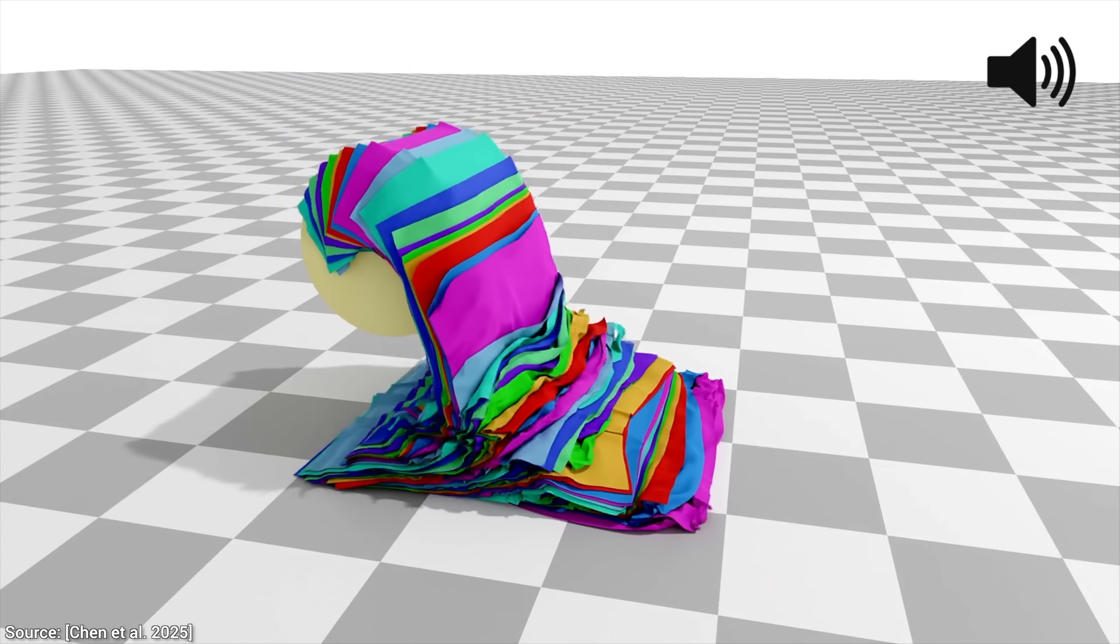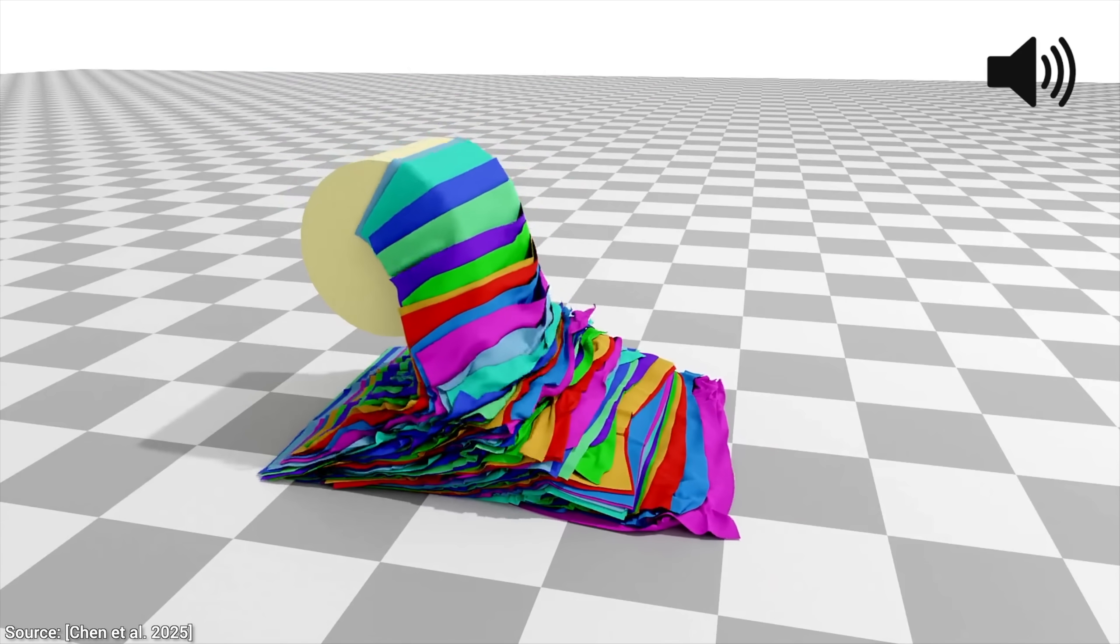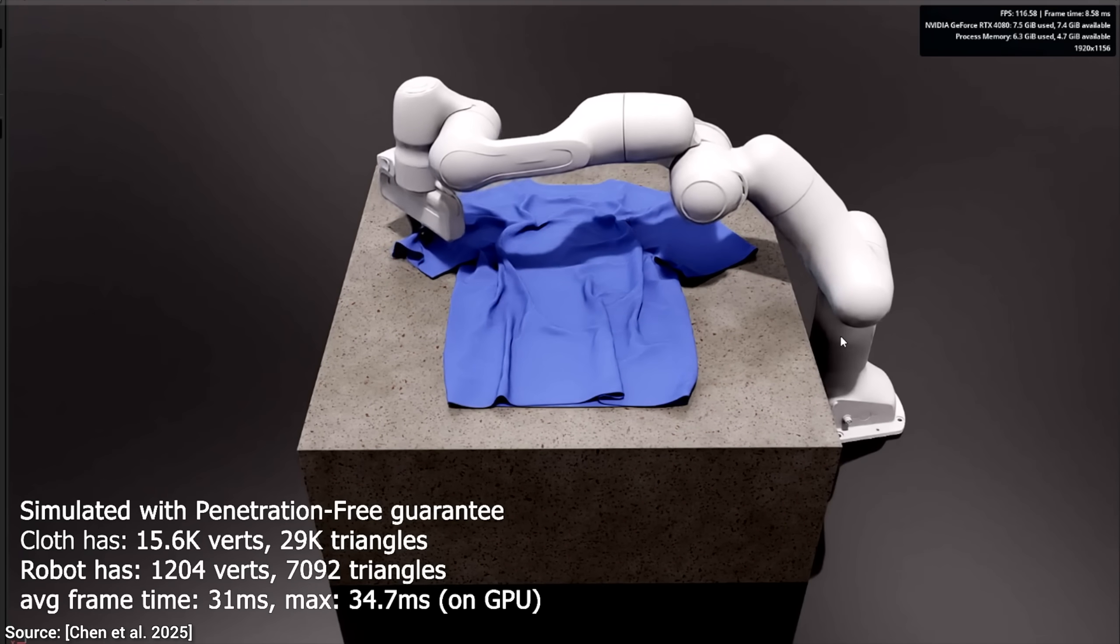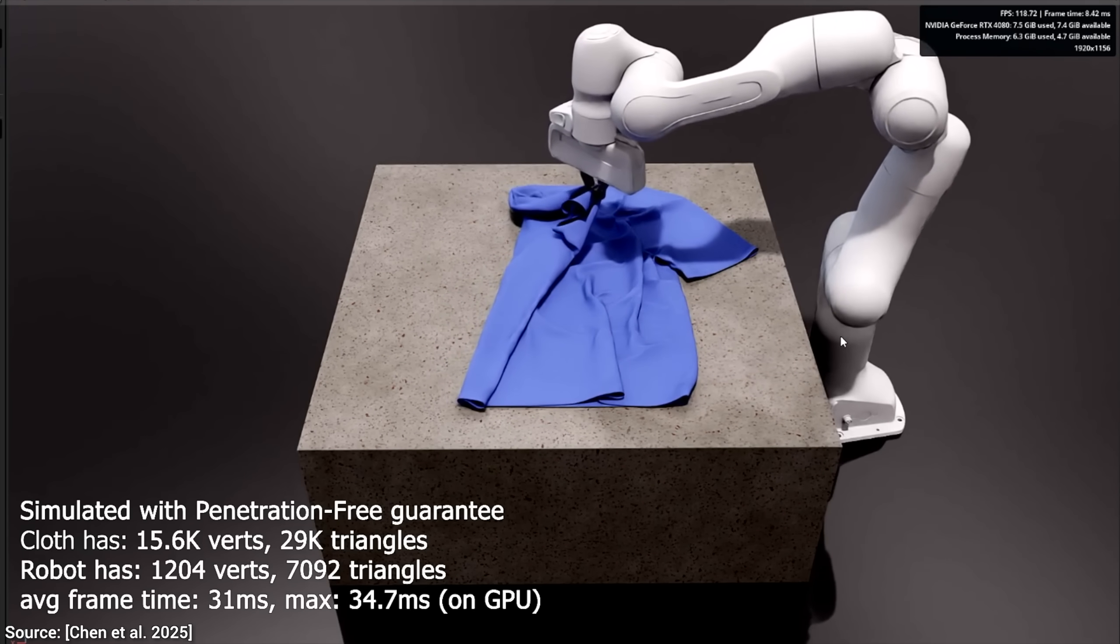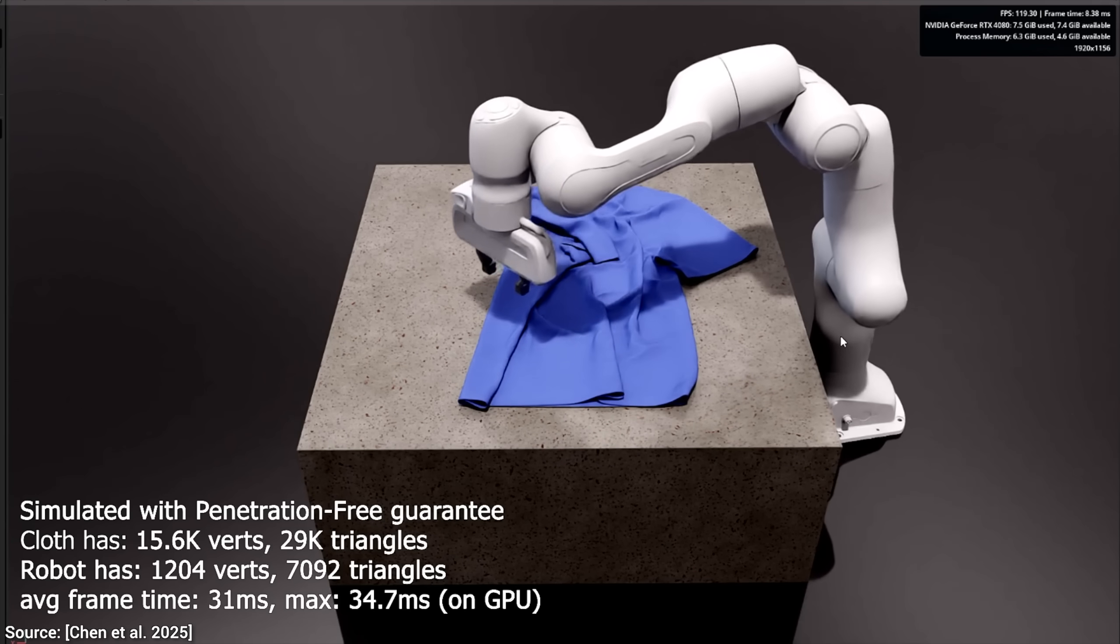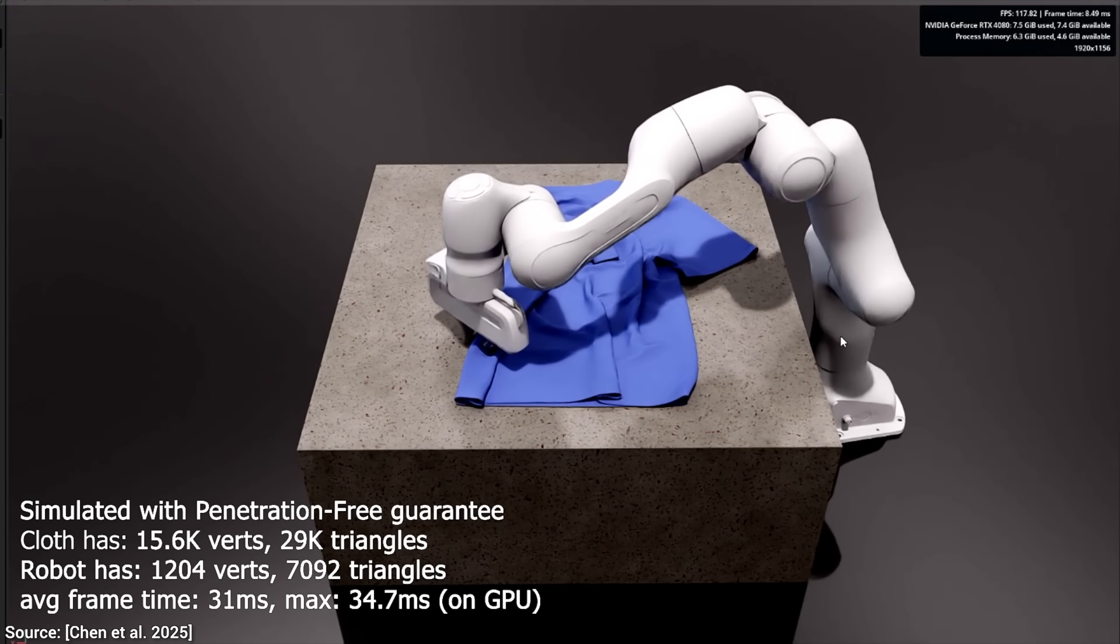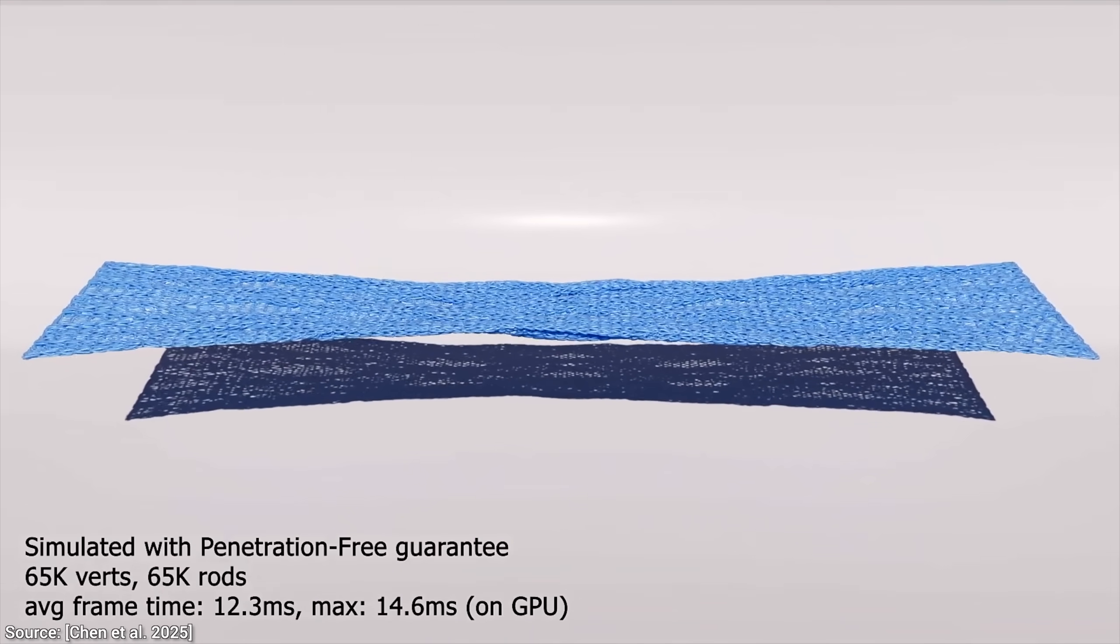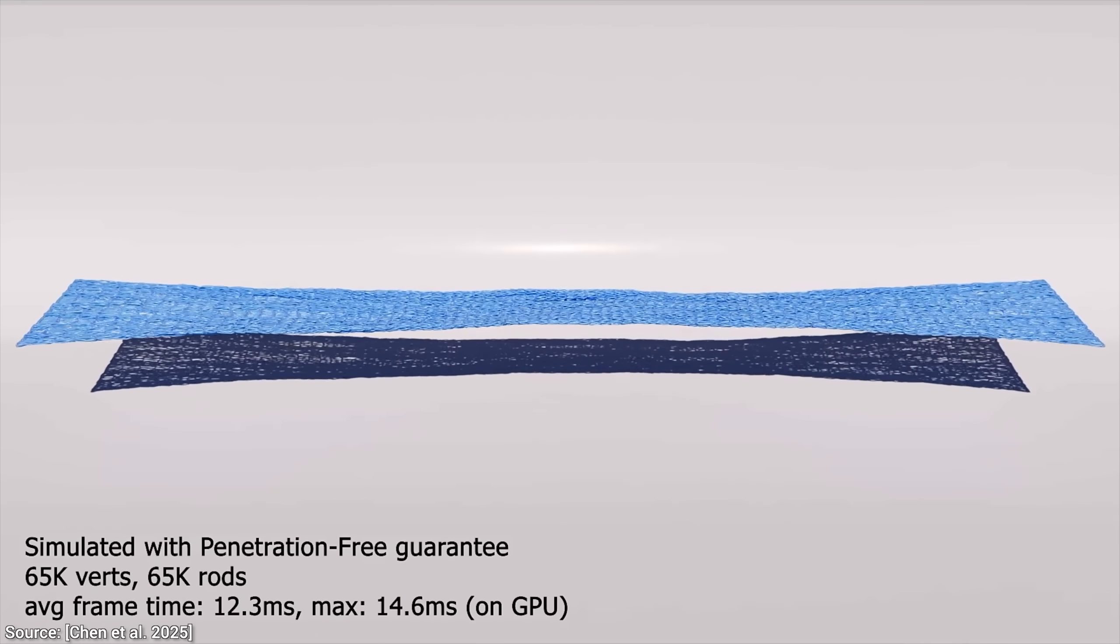And this scene is built from almost two million, yes, two million triangles. And this technique can do this calculation 10 times per second on average. That is absolutely amazing. And it creates a penetration-free simulation that was previously nearly impossible.